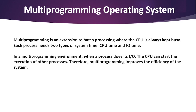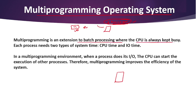Next we have multi-programming operating system. On a single processor computer, a multi-programming operating system can run many programs. With the help of one processor, we can run multiple programs simultaneously. If one program must wait for an input/output transfer, the other programs are ready to use the CPU. As a result, different jobs may have to split CPU time. Multi-programming is an extension to batch processing where the CPU is always kept busy.